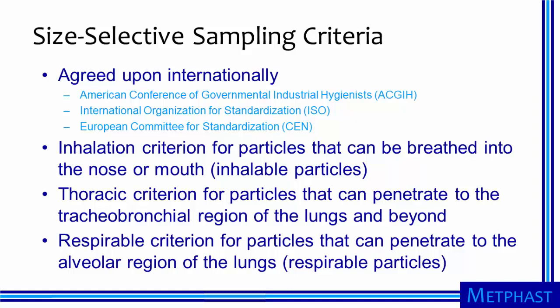So the inhalable criterion includes those particles that can penetrate to all parts of the lung. The thoracic criterion includes particles that can penetrate to the tracheobronchial and alveolar regions. And the respirable criterion includes only those particles that can penetrate to the alveolar region.